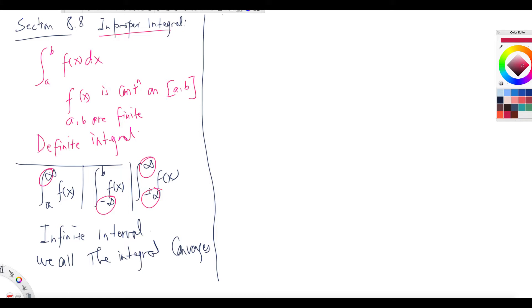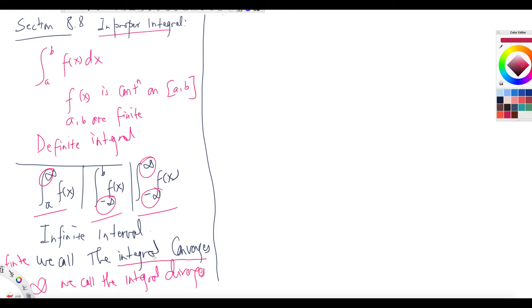Although one or both limits are infinity, sometimes the integral may be a finite number. If the integral is a finite number, we call that integral convergent. But sometimes you get the integral equal to infinity — in that case we call the integral divergent.